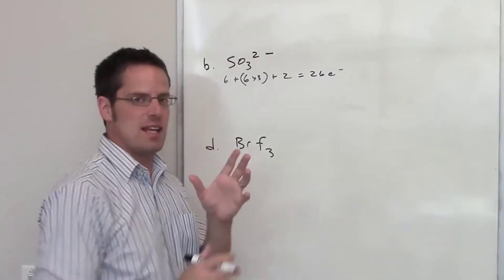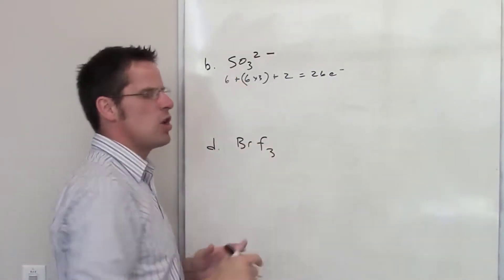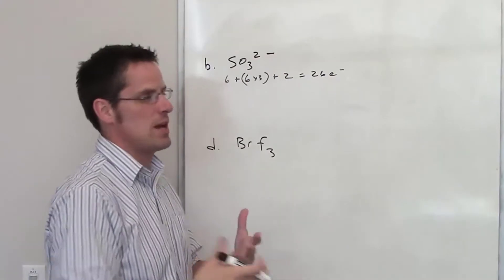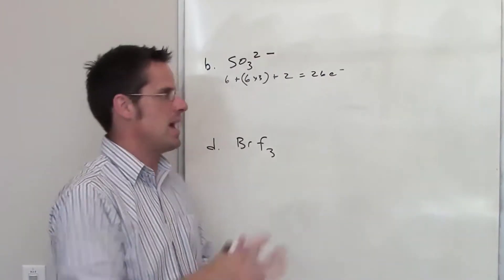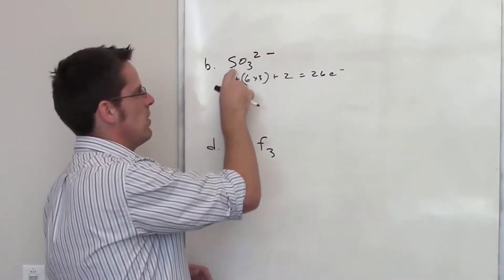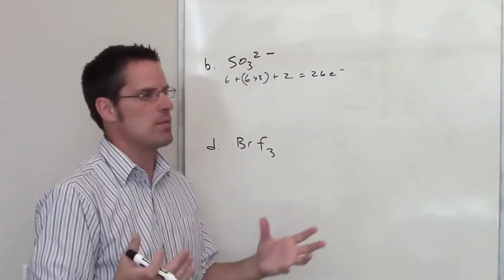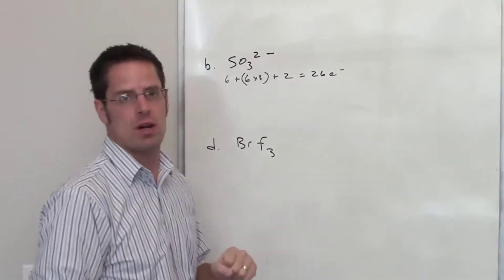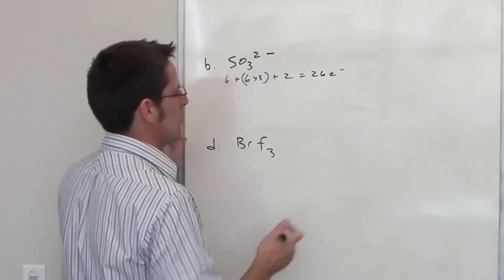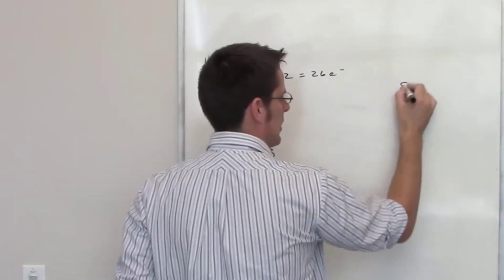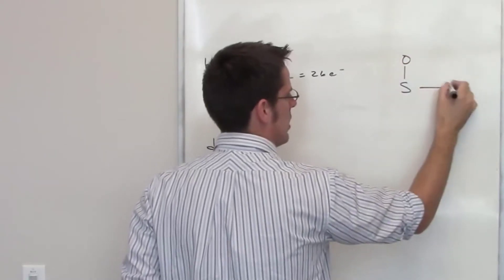Step two is to take the central atom, in this case sulfur, which is almost always the less electronegative atom in the system. It's usually the one that's written to the left in the formula. The major exception is hydrogen, because hydrogen can never be a central atom, because it can only have one bond. In this case, we've got sulfur as a central atom, so I'll just take sulfur and draw a single bond out to each of the oxygens.